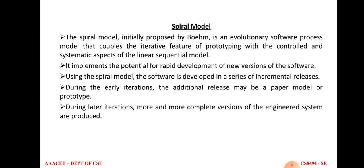What is the spiral model? It was initially proposed by Boehm. It is also an evolutionary software process model and a combination of iterative and incremental model. By using the spiral model, software is developed in a series of incremental fashions.